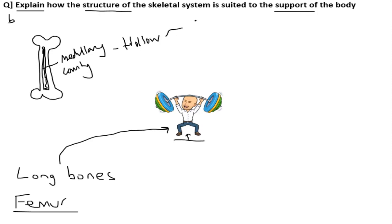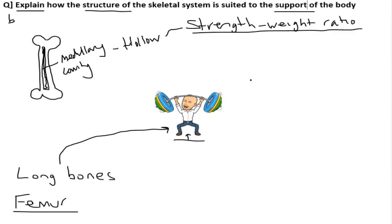Being hollow gives long bones the best strength to weight ratio - something we'll investigate in class using cardboard, weights, and paper legs. The analogy is this: if we take a tabletop and make some legs by folding an A4 page of paper really tightly and solidly to make four legs - basically taking an A4 sheet, putting it on its side and folding it as tightly as possible to make solid legs.